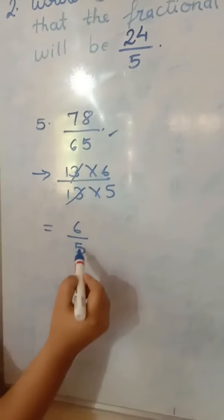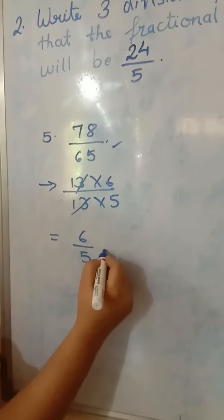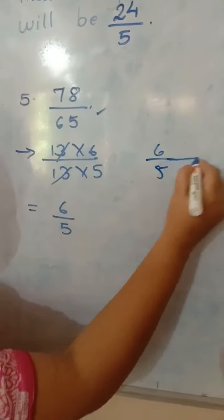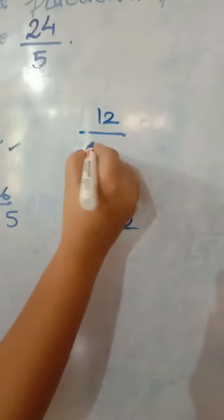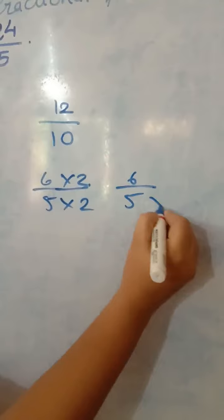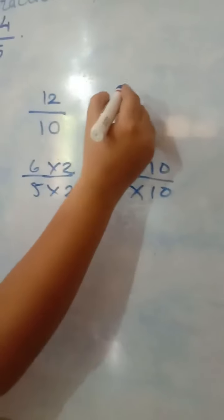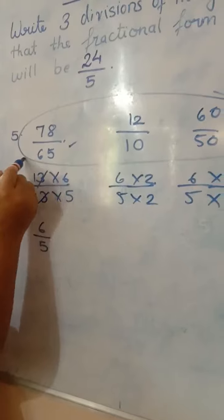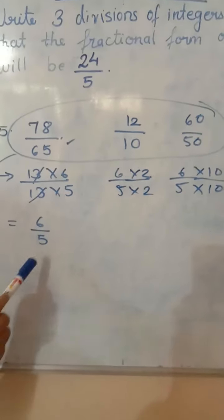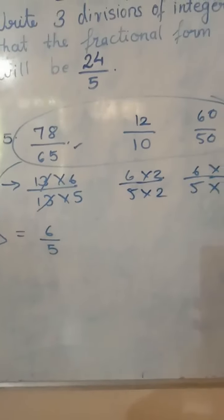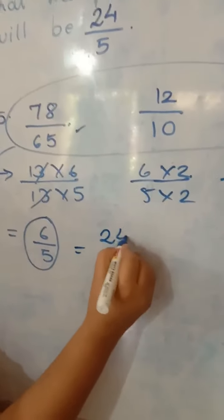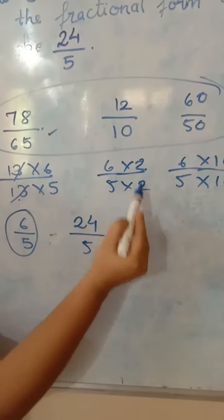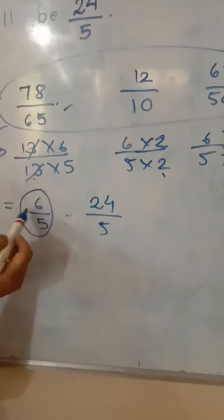In the same way, if we take 6 upon 5 and multiply by 2, we get 12 upon 10. If we take 6 upon 5 and multiply by 10, we get 60 upon 50. So these are three divisions which give the answer 6 upon 5. Now in place of 6 upon 5 we have 24 upon 5, so we do the same process in our minds using the multipliers 13, 2, and 10 to get the equivalent fractions.